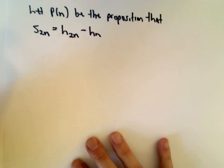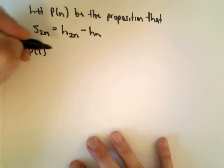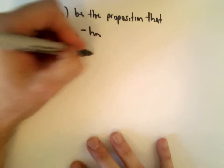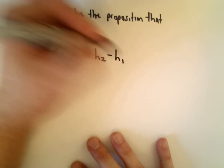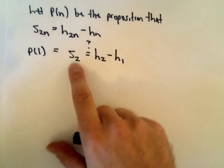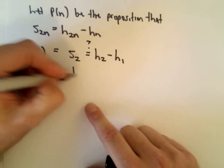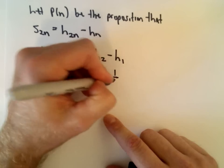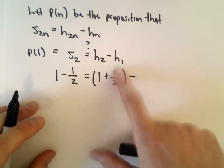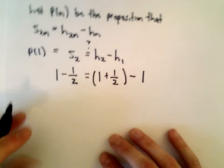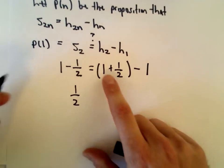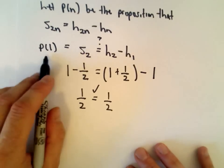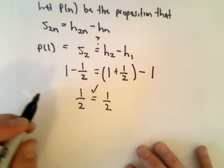Let's prove the base step, P(1). P(1) says s sub 2 equals h sub 2 minus h of 1. The first two terms of the alternating harmonic series gives 1 minus 1 half. h of 2 is 1 plus 1 half, and we subtract h of 1 which is just 1. On the right side: 1 plus 1 half minus 1 — the ones cancel, leaving 1 half. So P of 1 is, in fact, a true statement.